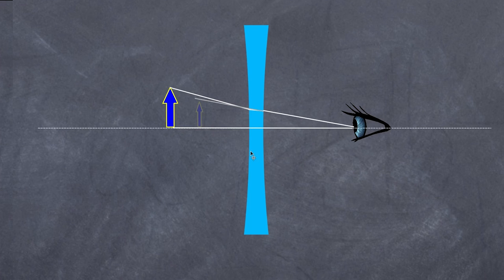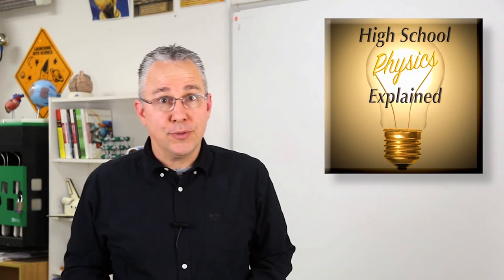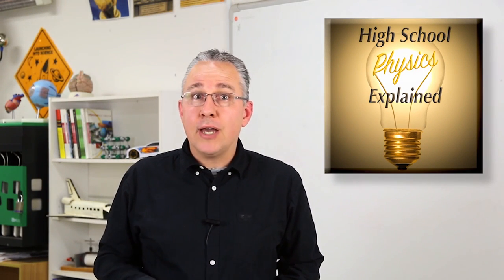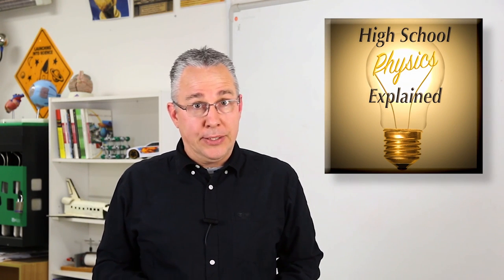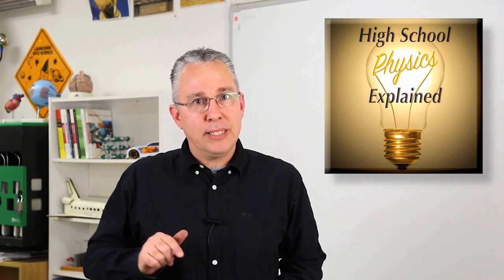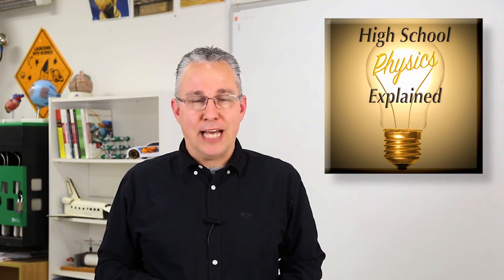I hope that gives you an understanding of a convex and a concave lens and how each produces a different type of virtual image. Thanks for watching. I hope you found that video useful — please like, share, and subscribe. If you have a comment, question, or a concept you'd like me to explain, drop a comment below. I'm Paul from High School Physics Explained. Bye for now.